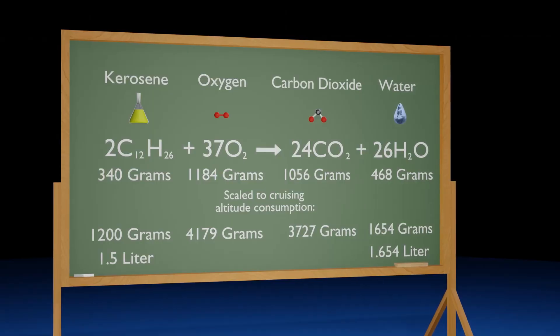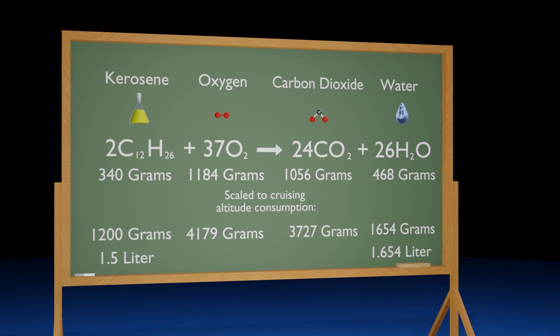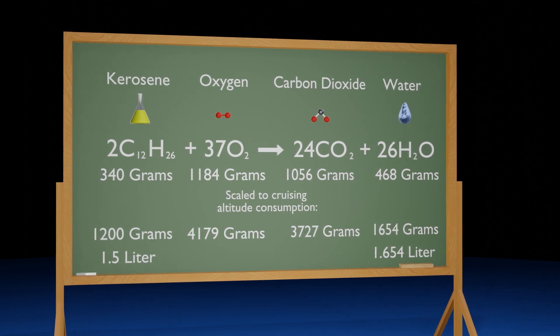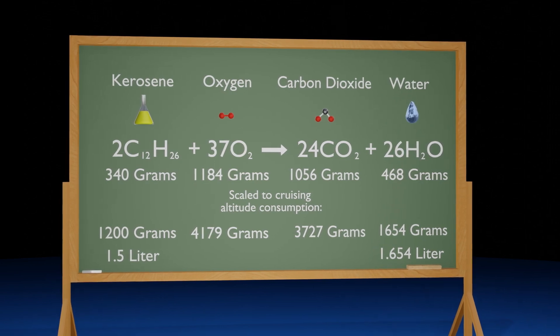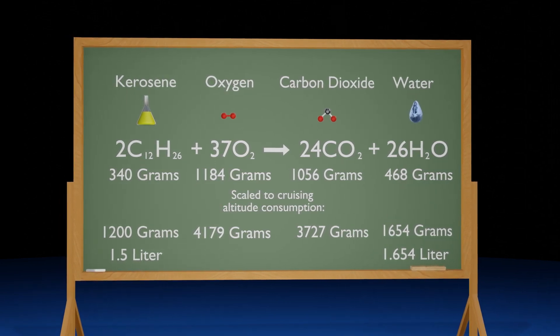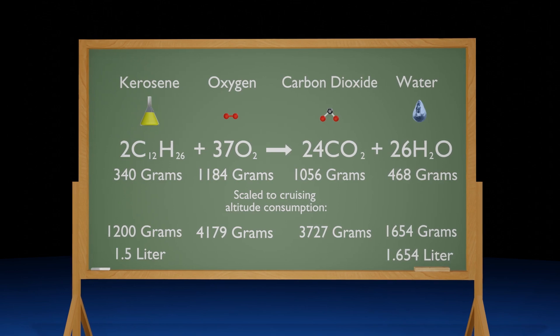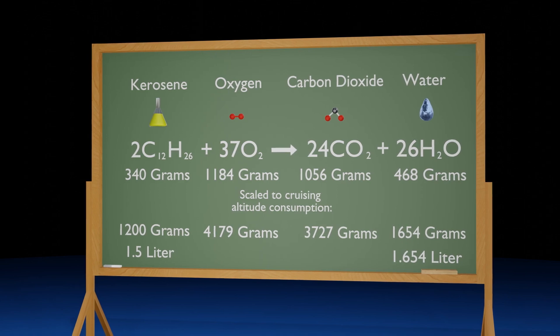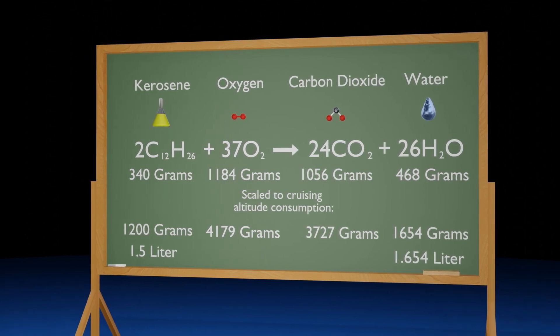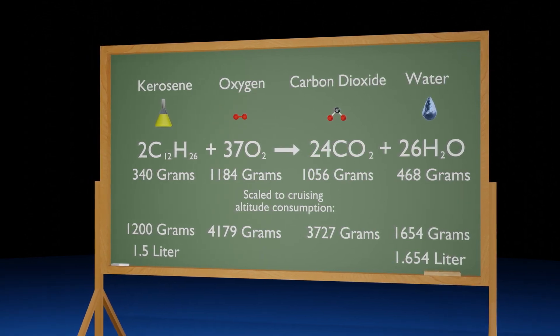Through the help of stoichiometry, we can find out how much of these gases are being produced. A Boeing 787 burns roughly 1.5 liters of fuel mixed with just over 4 kilograms of oxygen every second when at cruising altitude. This produces 3.7 kilograms of carbon dioxide and over a liter and a half of water in the form of an invisible gaseous vapor.